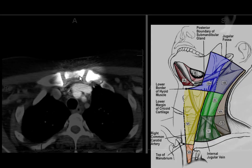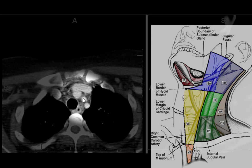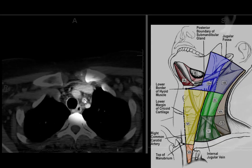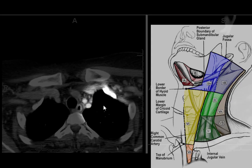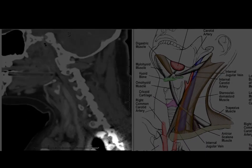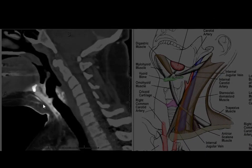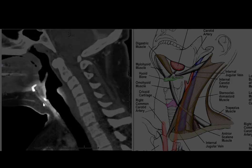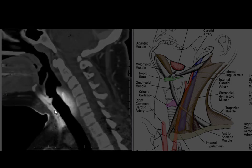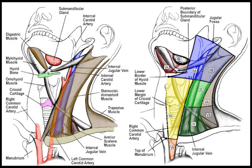Level 7 is going to be inferior to the manubrium of the sternum and between the carotid arteries, which doesn't give us a very large space in this patient. The sagittal reconstruction can be helpful in regard to the inferior border of the hyoid bone and the inferior border of the cricoid cartilage. And that's it — I hope you find lymph node levels a little more straightforward.